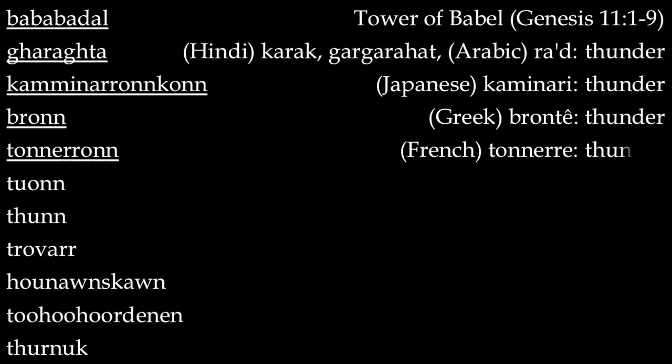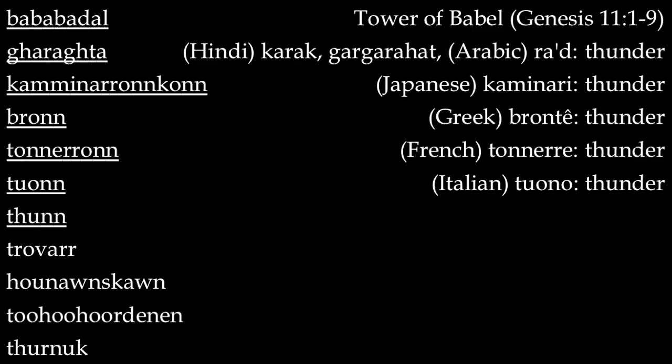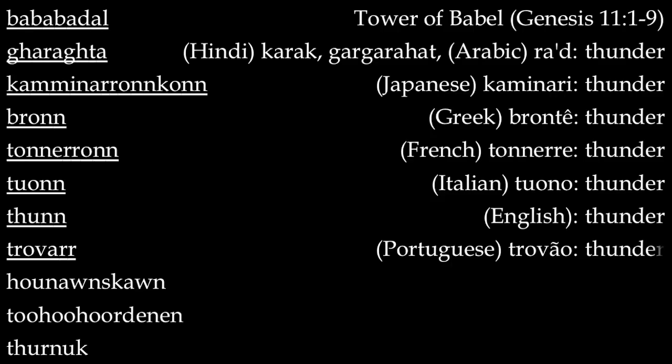Italian: tuono. By the way, Joyce spoke French and Italian like most native speakers would. Speaking of native speakers, thun — there it is in English. So it's not all that hard after all. Trovar — can you guess it? It's Portuguese for thunder. Then we have hunanskan, which is a combination of the Swedish and one of the Irish words for thunder, oska and skan, respectively.